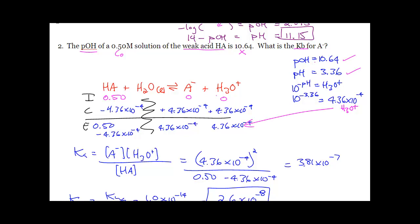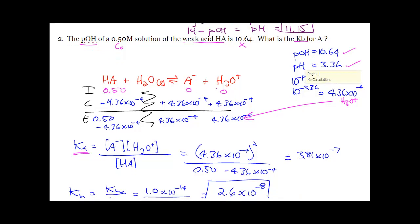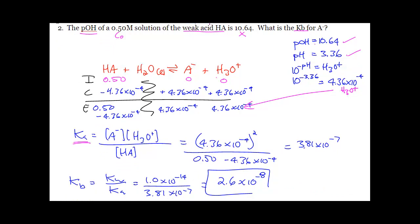Now that H3O+ value is the concentration at equilibrium — litter your ICE table with that number. Plug everything straight into your calculator, take your time, check your brackets, and you're going to get 3.81×10⁻⁷. But that is a Ka — we need KB. So the last step is KW divided by Ka, and you're going to get 2.6×10⁻⁸. A lot of stuff going on — we're going to really focus our attention in groups tomorrow, and it is going to work out.